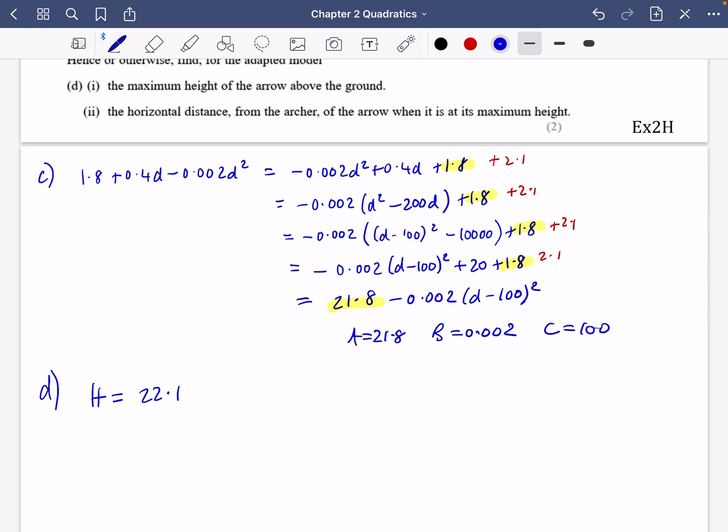The whole thing is now just going to be that h equals 20 + 2.1, so 22.1 instead of 21.8 minus 0.002(d - 100)². Now this is going to tell us about the maximum height and the horizontal distance. So we can see here, the maximum height is just going to be 22.1 meters. And the value of d, the horizontal distance when it reaches the maximum height, the horizontal distance is just going to be when this bit's equal to zero. In other words, when d is 100 meters. So we get 22.1 and 100.